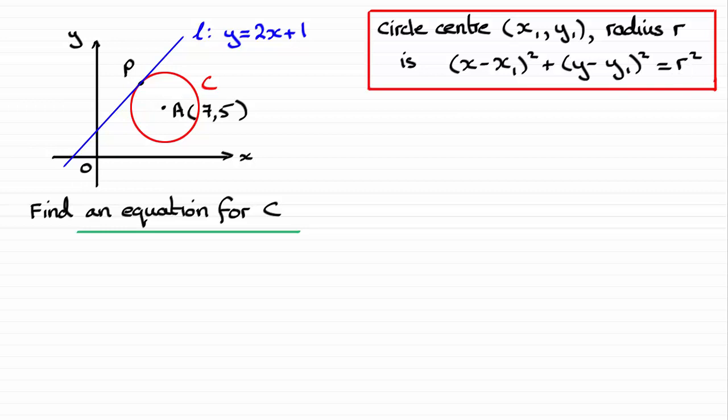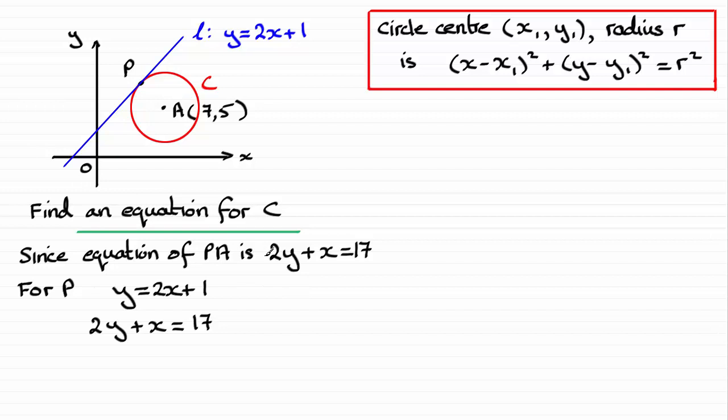So if we look at what we already know, the equation of PA from the first part was 2y + x = 17. Then for this coordinate point P here, we just have our two equations: y = 2x + 1, which I'll call ①, and 2y + x = 17, I'll call that equation ②.